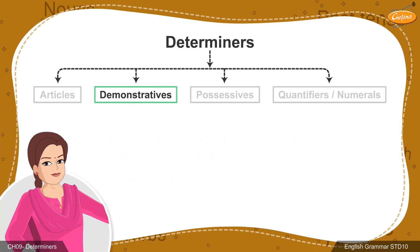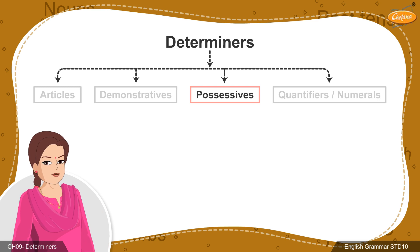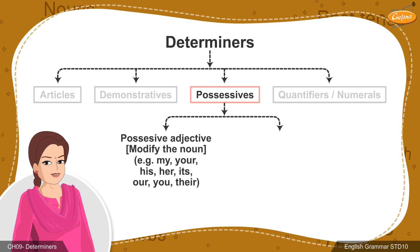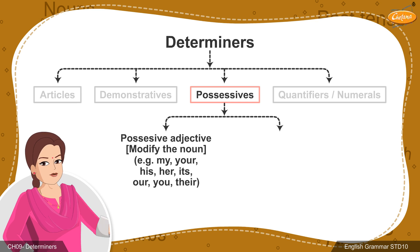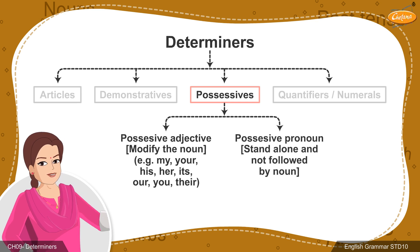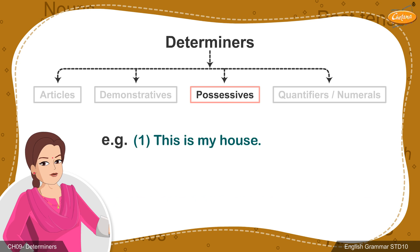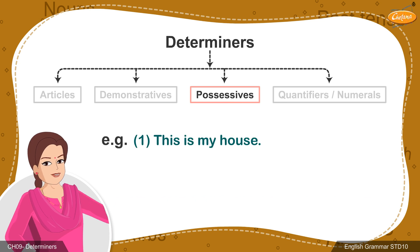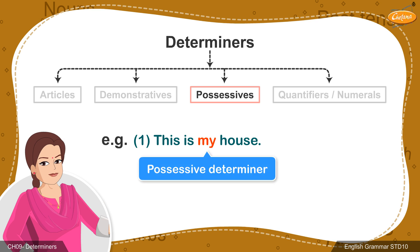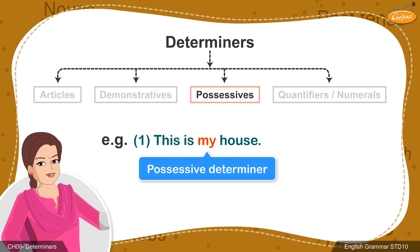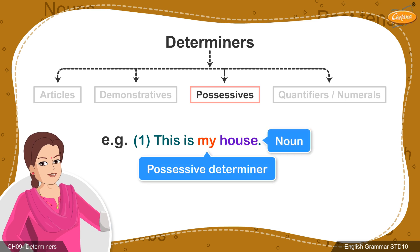Next, let's move on to possessives. Possessive adjectives always modify the noun that follows in order to show possession. Possessive pronouns on the other hand are not followed by nouns and can stand alone. Possessive determiners are always followed by nouns. In the given example, 'this is my house,' 'my' must be considered a possessive determiner since it is followed by a noun 'house.'